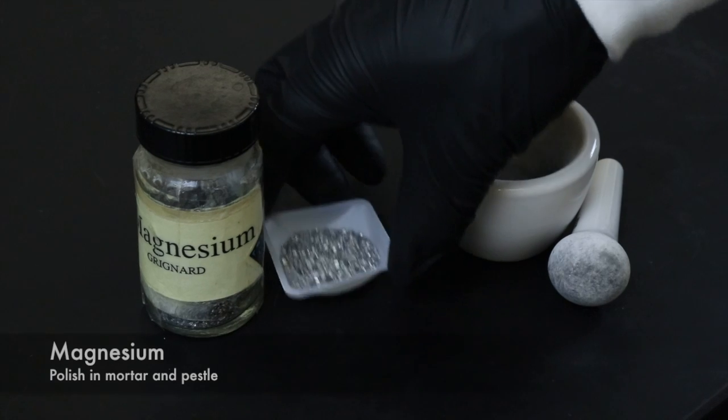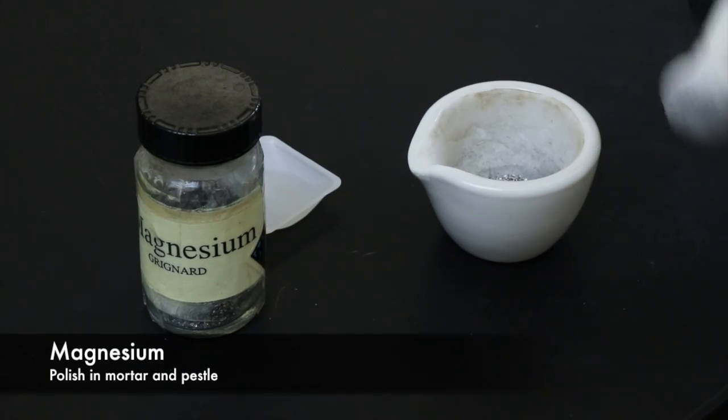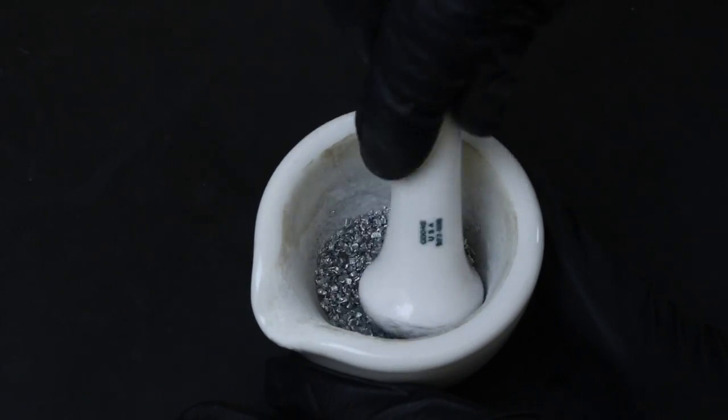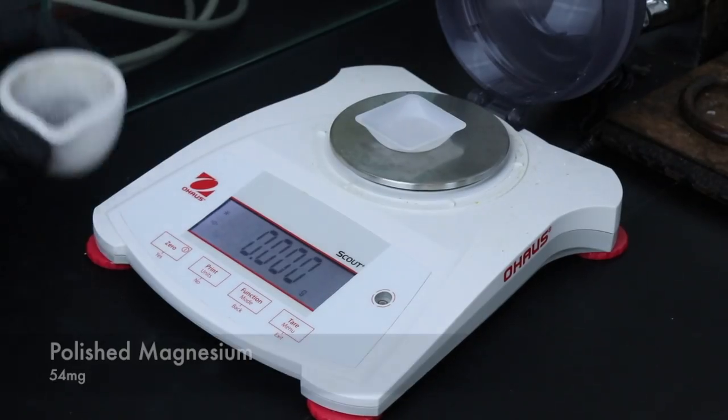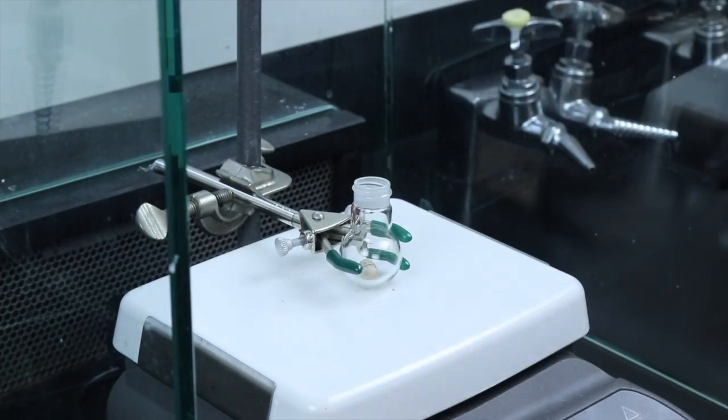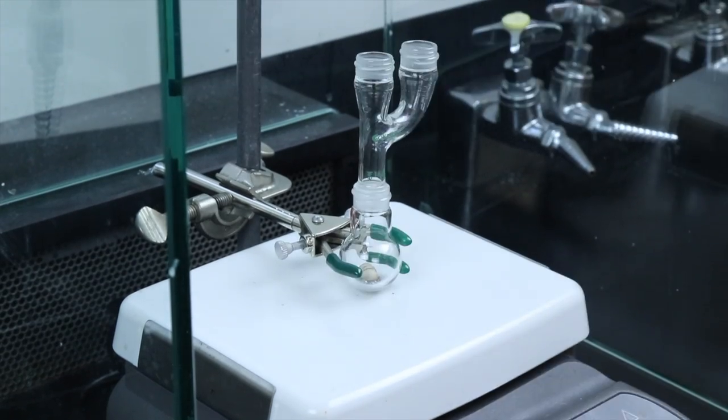I'll want to polish the magnesium metal before using it in the reaction. So I'll be using a mortar and pestle to do that. Once that's done, I'll weigh out 54 milligrams of the polished magnesium, add it to the round bottom flask, and finish setting up the apparatus.